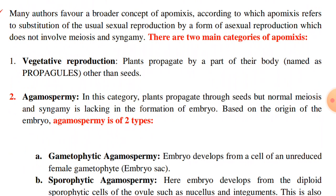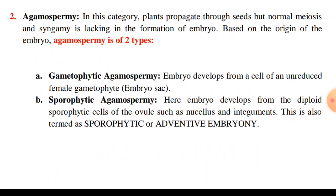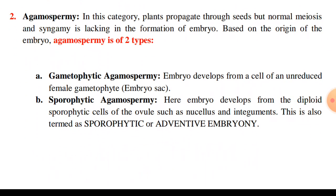In vegetative reproduction, plants propagate by a part of their body which are named as propagules, other than seeds. That is, here the part of the body is functioning as a propagule. The second category is agamospermy, in which plants propagate through seeds but normal meiosis and syngamia is lacking in the formation of the embryo.